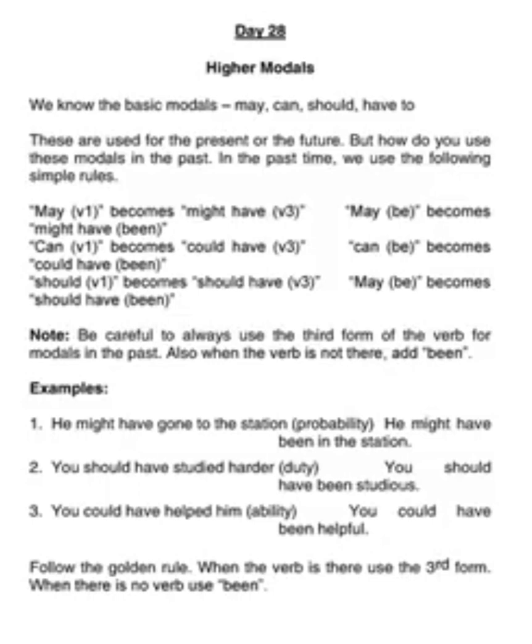Examples make it very clear. 'He might have gone to the station' — probability. 'He might have been in the station' — no verb, so might have been. 'You should have studied harder' — duty. 'You should have been studious.' 'You could have helped him' — ability in the past. 'You could have been helpful.' So follow the golden rule: when the verb is there, use the third form; when there is no verb, use been.